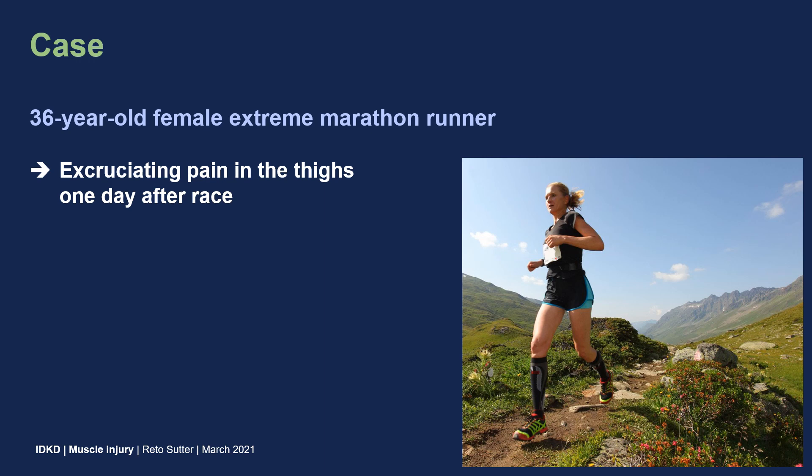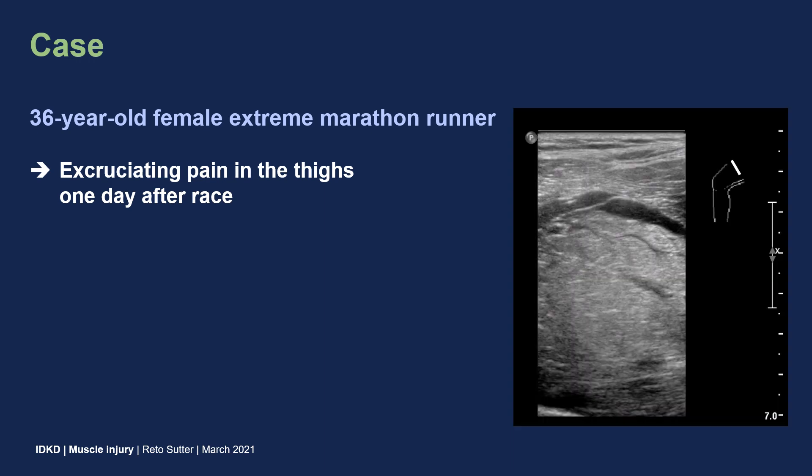I present to you the case of a 36-year-old female extreme marathon runner. In this case, extreme marathon means very long distances in the mountains with a lot of uphill and downhill running. The patient presented to my department one day after the race. She had excruciating pain in both her thighs and was barely able to walk. We performed an ultrasound examination and you can see a transverse section of the right thigh with a lot of perifascial fluid around the quadriceps femoris muscle, but also increased fluid within the muscle itself.